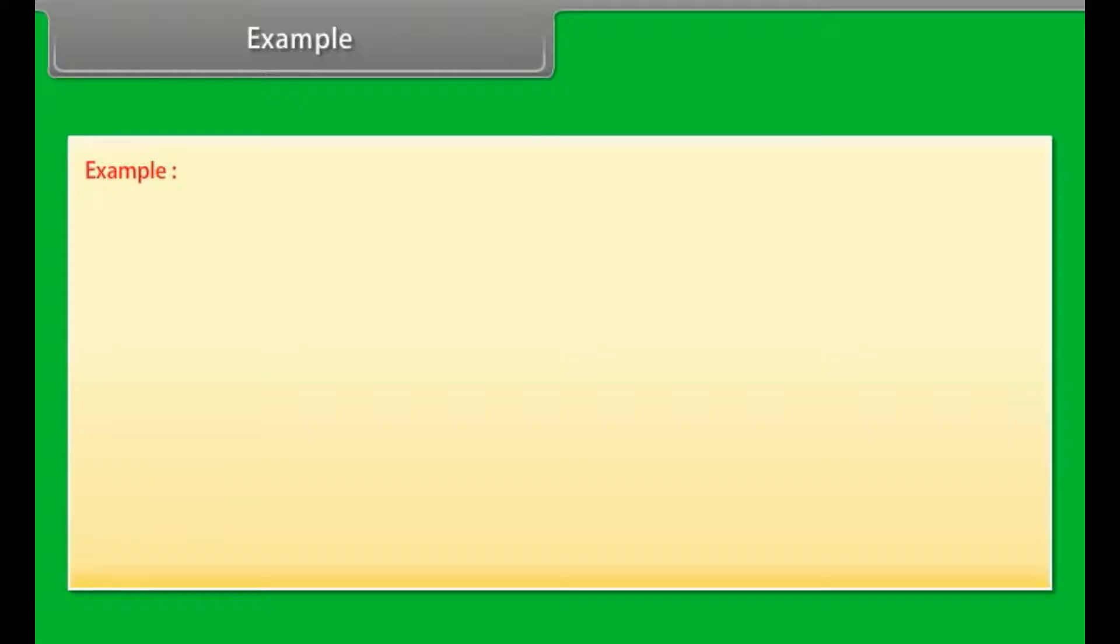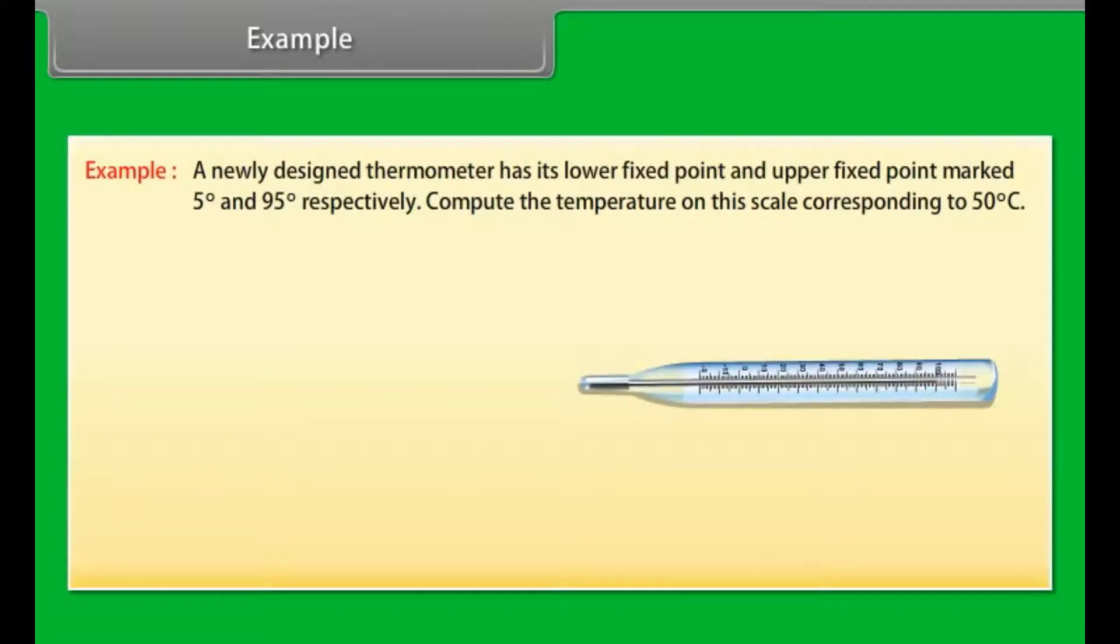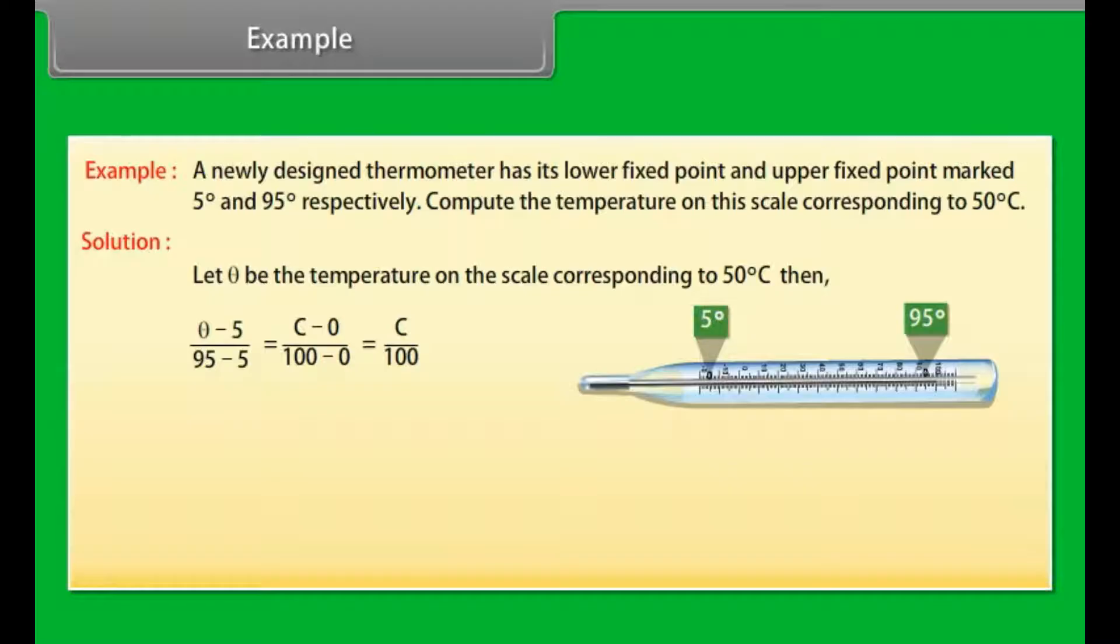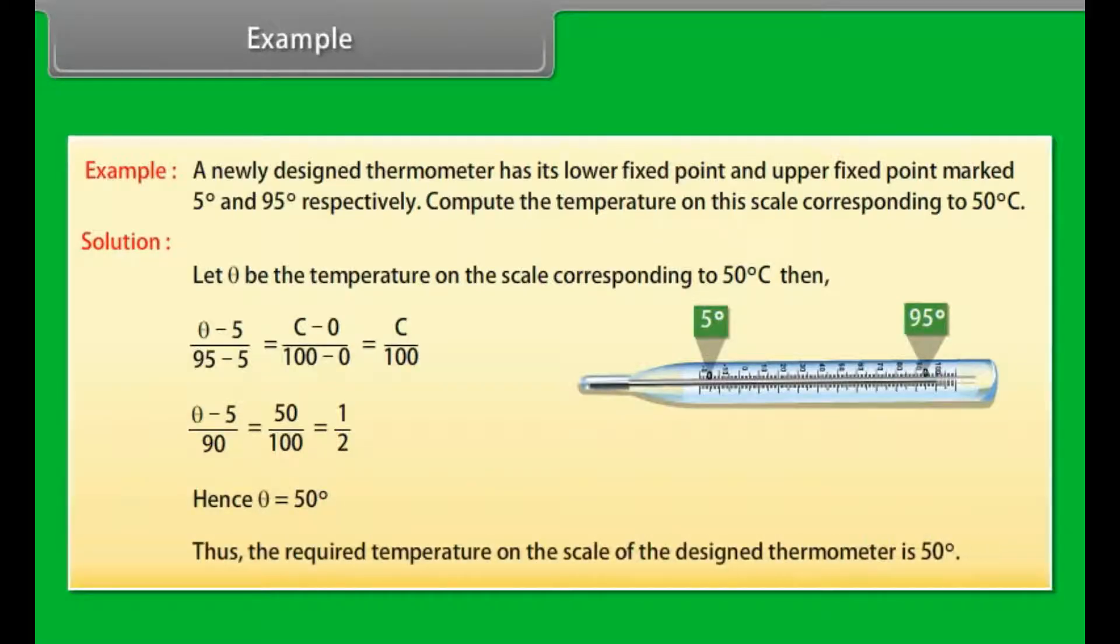Example. Let's take an example on measurement of temperature. A newly designed thermometer has its lower fixed point and upper fixed point marked 5° and 95° respectively. Compute the temperature on this scale corresponding to 50°C. Solution: Let θ be the temperature on the scale corresponding to 50°C. Then (θ-5)/(95-5) = C/100. On simplifying we get (θ-5)/90 = 50/100. Hence θ = 50°. Thus the required temperature on the scale of the designed thermometer is 50°.